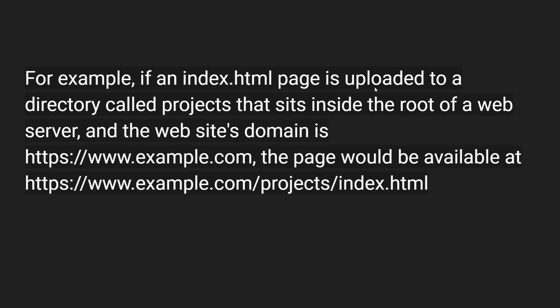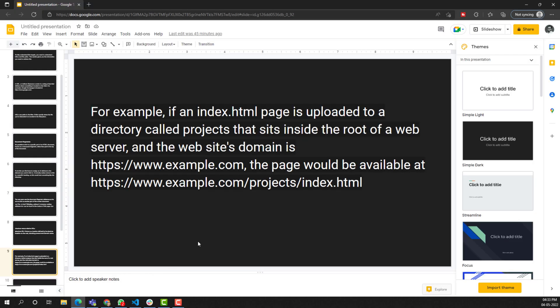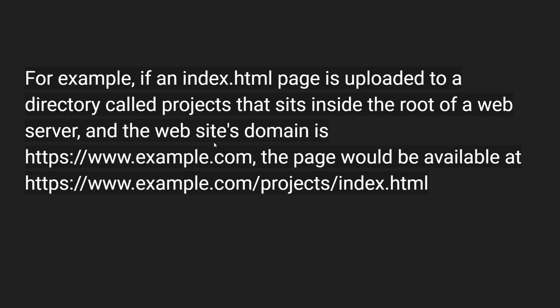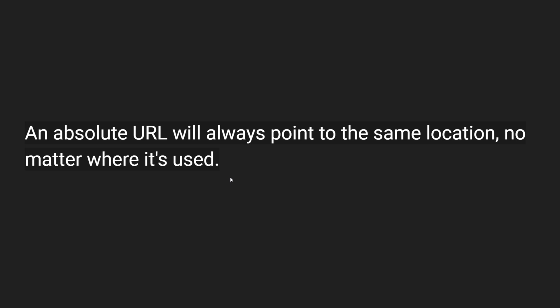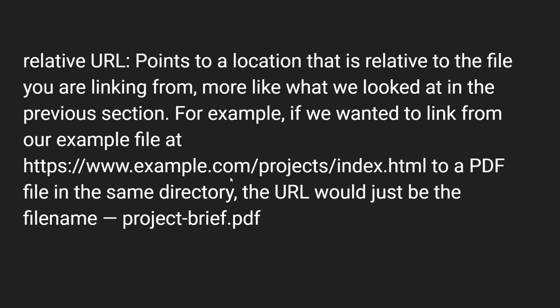For example, if an index.html page is uploaded to a directory called projects that sits inside the root of a web server, and the website domain is example.com, the page would be available at www.example.com/projects/index.html. An absolute URL will always point to the same location no matter where it is used. You can copy this URL and use it wherever you want in any web page or document — it will always move to the Google homepage. It will not point to any other location.